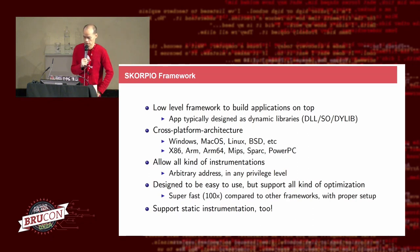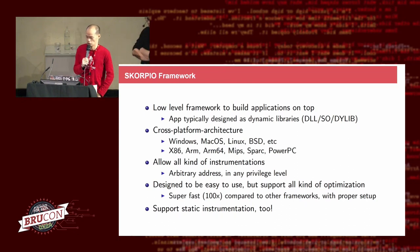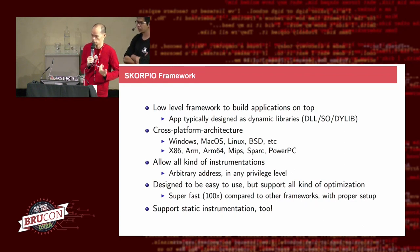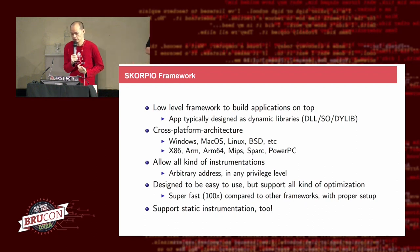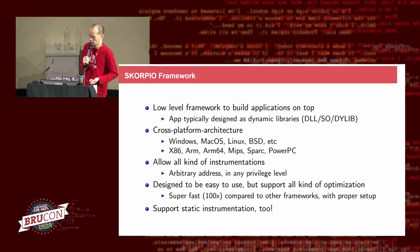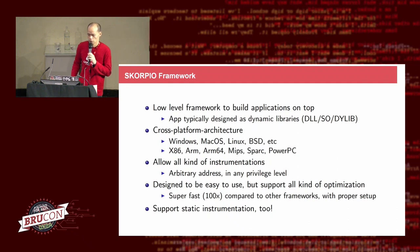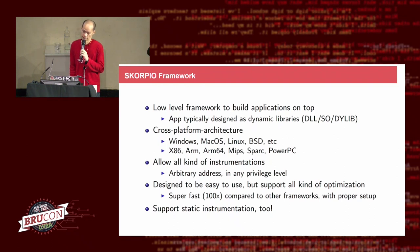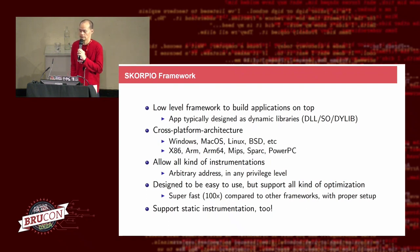Because nothing works for us, we wanted something better. So we designed our own DBI framework named Scorpio. It's a low-level framework on which you can build your application. The application is typically designed as a dynamic library — DLL for Windows, SO for Linux, DL for Mac. At runtime, we inject these dynamic libraries into the target program. Scorpio works cross-platform and cross-architecture — it works on all kinds of operating systems: Windows, Mac, Linux, BSD, Android, and so on. It supports all popular CPUs.